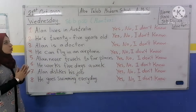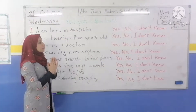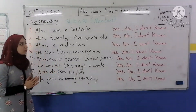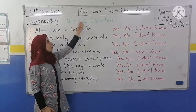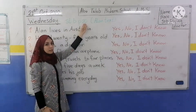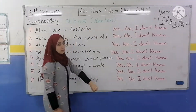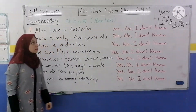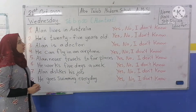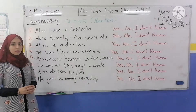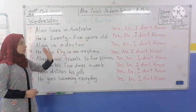Today we are going to do exercise number 2 in student book page 20 that talks about Ellen Morton. Open your student book page 20 to do exercise 2.